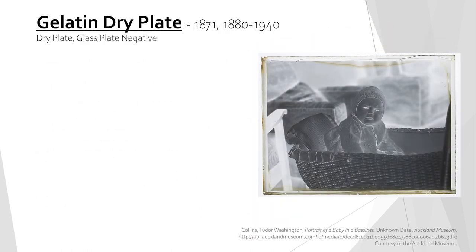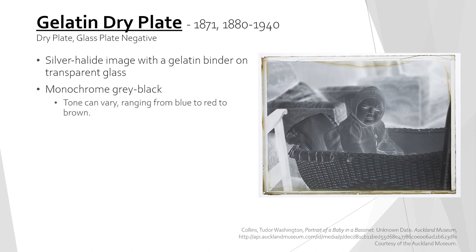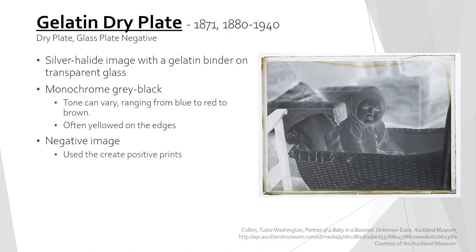The gelatin dry plate method was invented in 1871 and was popular from 1880 to 1940. They consist of a silver halide image with a gelatin binder on a transparent glass plate. The image is monochrome in gray or gray black, but the tone can be modified with other additives and can range from blue to red to brown. It is very common for the image to have yellowed on the edges with age, which can be seen on the example on the right. This process produces a negative image which is then used to create many of the positive prints discussed in the paper photography section. The glass plate used is very thin — less than one sixteenth of an inch or two millimeters thick.